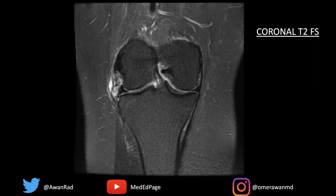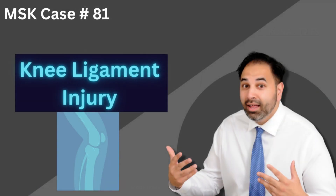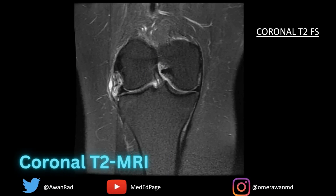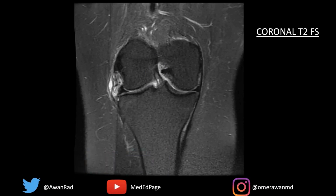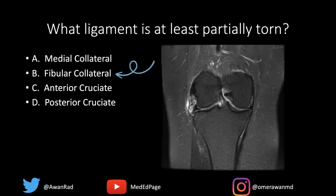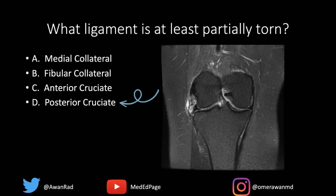Hello and welcome to MSK Unknown Case number 81. Here we have a great bread and butter case. This is a coronal T2 fat sat image through the knee. The question associated with this case is: what ligament is at least partially torn here? The medial collateral ligament, the fibular collateral ligament, the anterior cruciate ligament, or the posterior cruciate ligament?